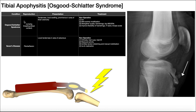Tibial apophysitis or Osgood-Schlatter syndrome presents with tenderness and local swelling in the area of the tibial tuberosity — there's swelling because of inflammation from chronically pulling on that unfused tuberosity. The tibial tuberosity may also be more prominent to palpation because it'll be a little bit larger and thicker. The reason is that the body, in an attempt to heal the tissue and keep that tuberosity in contact with the rest of the tibia before it fuses, is laying down more bone.